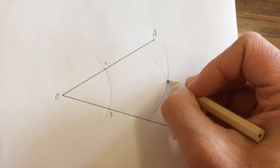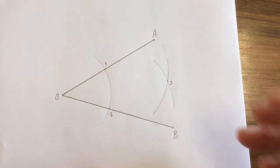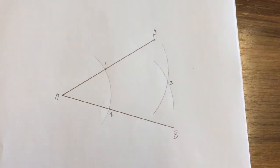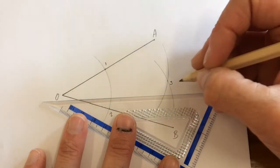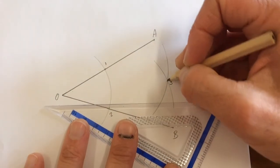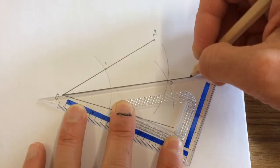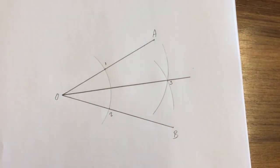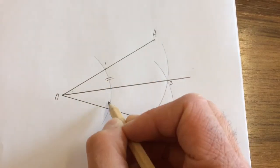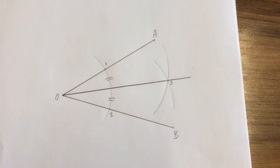The last part of the construction is you simply join point three back to position O with a straight edge. If you've done this correctly, this angle should be the same as this angle.